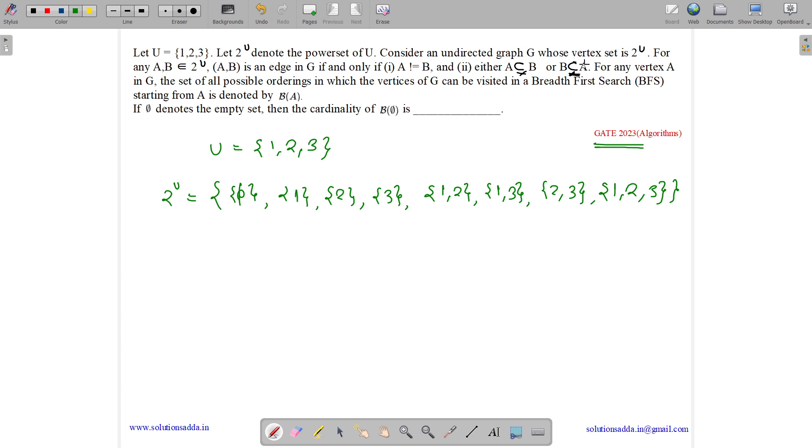An undirected graph whose vertex set is U. So we have a graph having U as its vertex set. Let us draw the vertices: phi, {1}, {2}, {3}, {1,3}, {2,3}, {1,2}, {1,2,3}, {1,3}, and {1,2,3}. So these are the vertices.